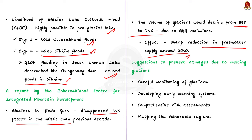The editorial also provides suggestions to prevent damages due to glacier melting. It says that careful monitoring of glaciers is essential, developing early warning systems is important, and making comprehensive risk assessments and mapping regions of vulnerability are also suggested. These are the important points from the editorial. Now, let us see the causes of melting glaciers.